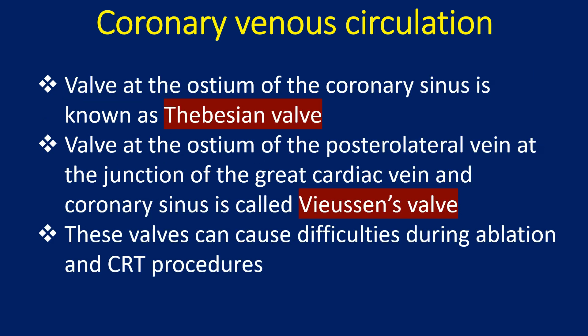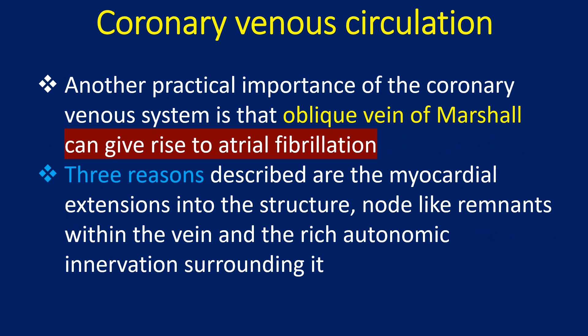The valve at the ostium of the coronary sinus is known as the Thebesian valve. The valve at the ostium of the posterolateral vein at the junction of the great cardiac vein and coronary sinus is called Vieussens' valve. These valves can cause difficulties during ablation and CRT procedures. Another practical importance of the coronary venous system is that the oblique vein of Marshall can give rise to atrial fibrillation.